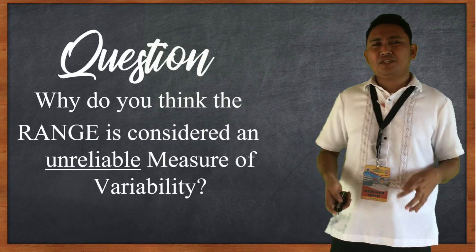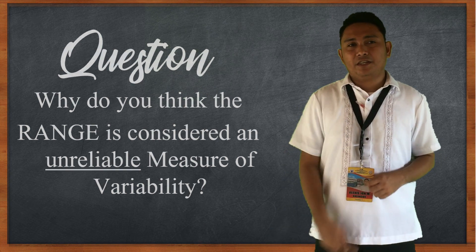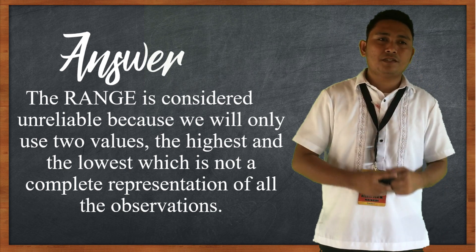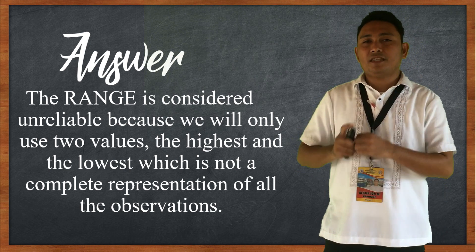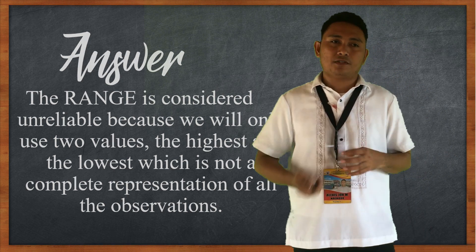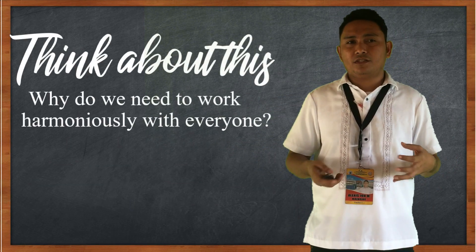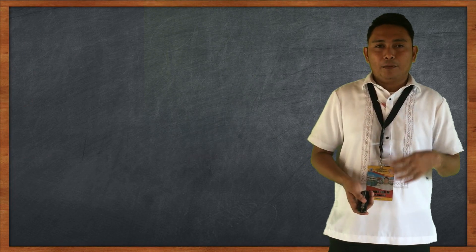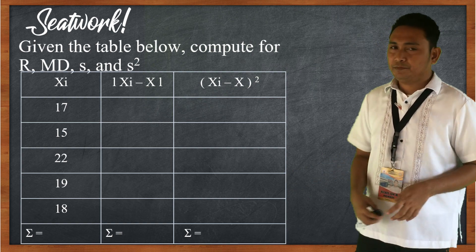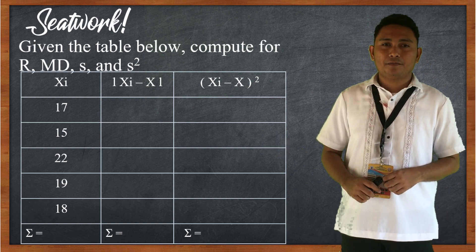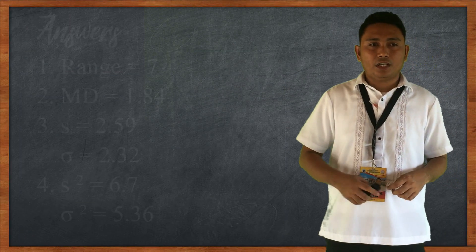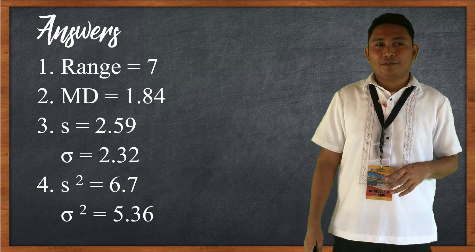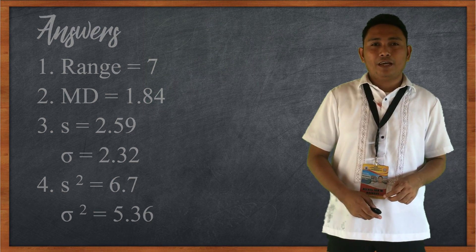Why is the range considered an unreliable measure of variability? The range is unreliable because it only uses two values — the highest and the lowest — which is not a complete representation of all observations. Think about this: why do we need to work harmoniously with everyone? What are the different measures of variability, and how do we compute each? To apply what you have learned, I will give you a seat work. You may pause the video to answer, then check your answers. If you are not correct, please re-watch the video. Have a good day!